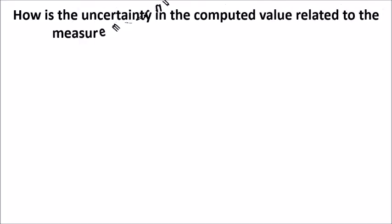But now, the question arises: If we have a functional relationship between two or more measured quantities, how is the uncertainty in the computed value related to the measurement uncertainty in the parameters?